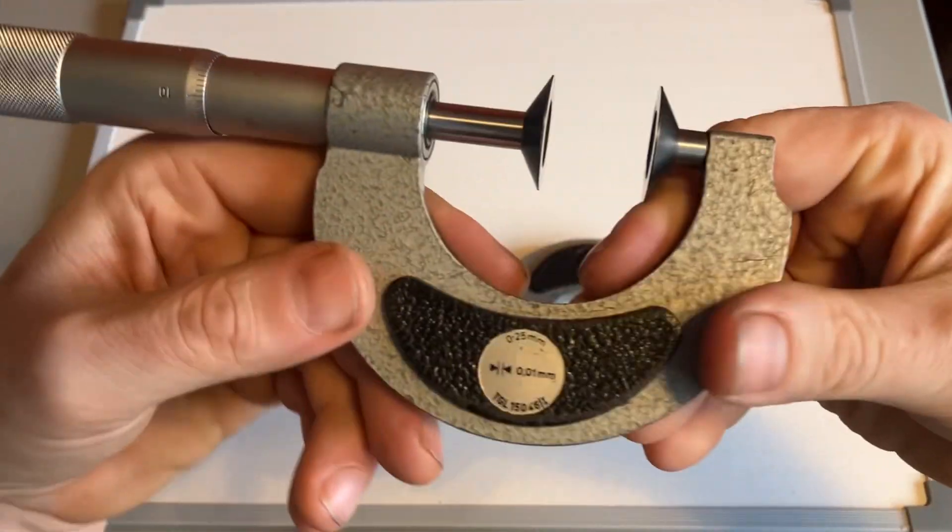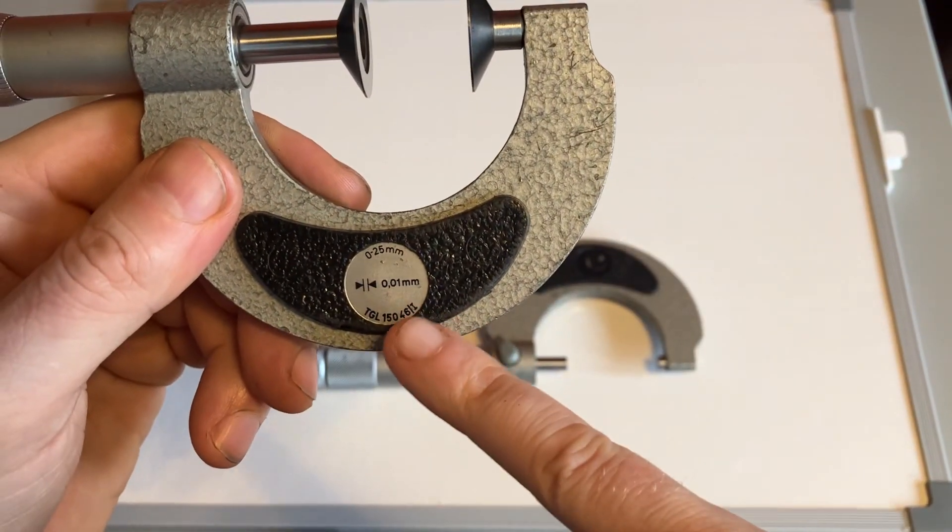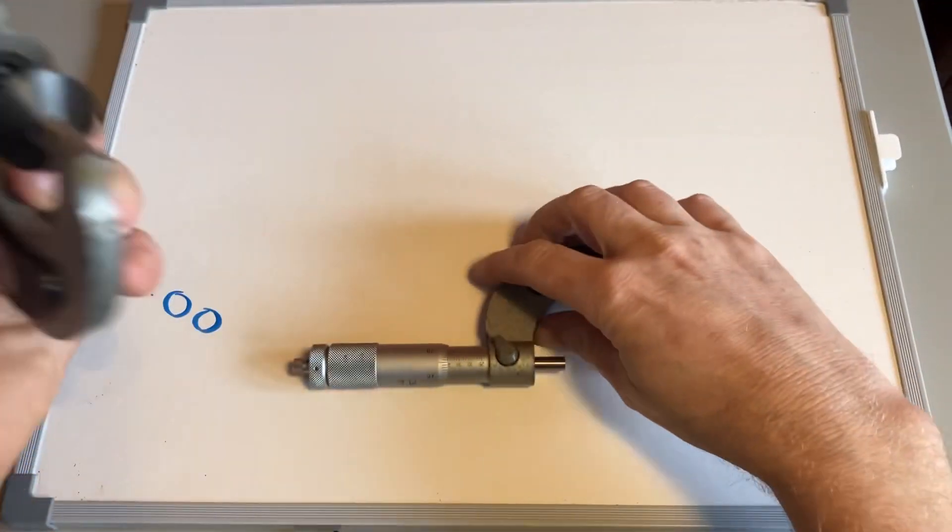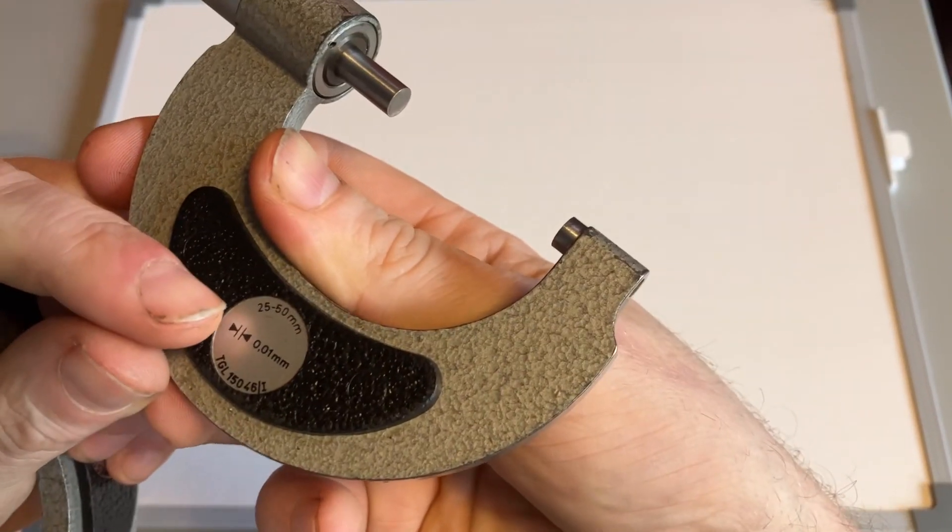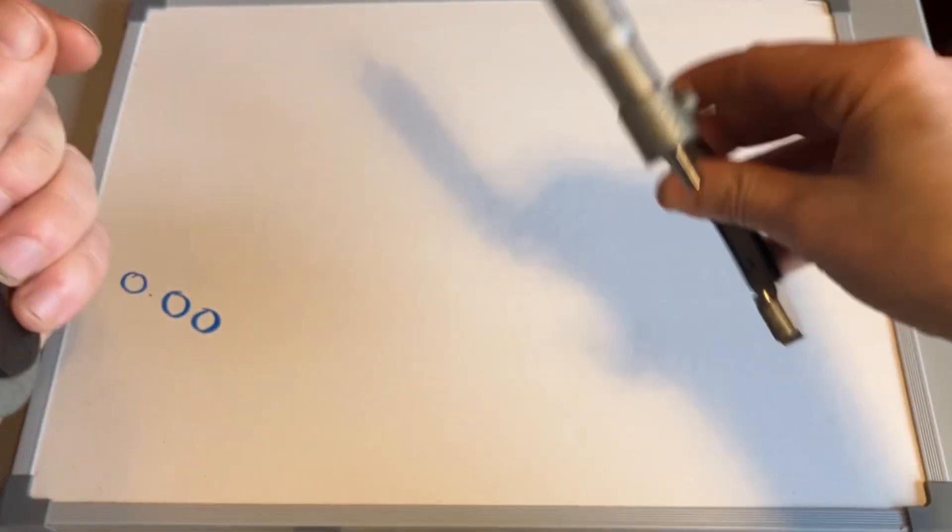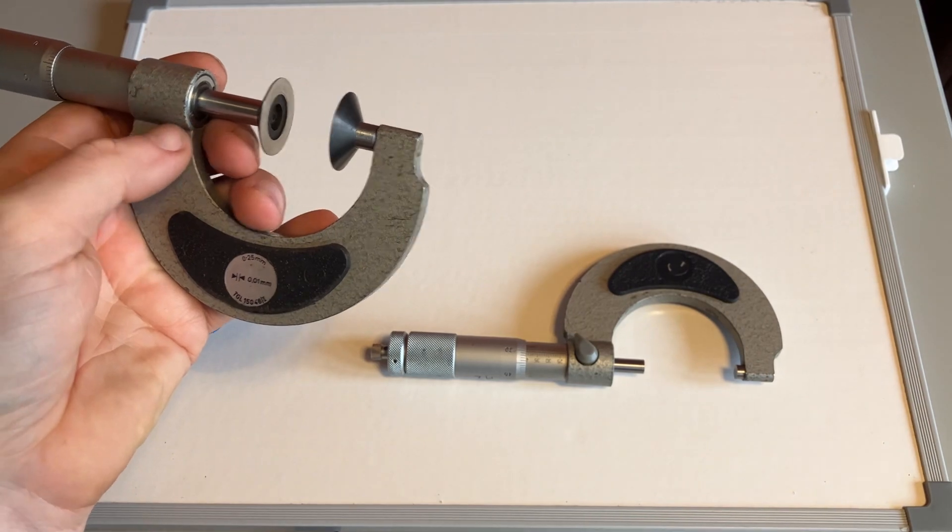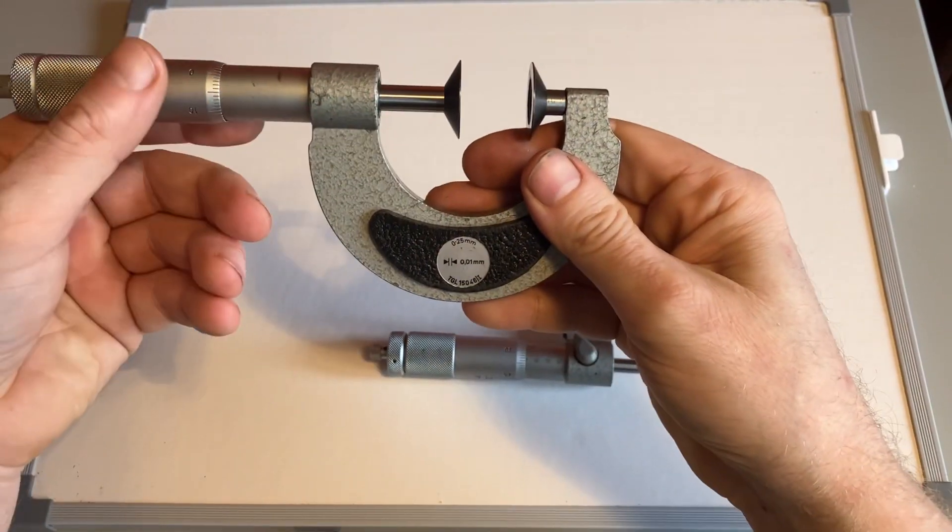First couple of things to mention, different micrometers have different gauges. This one is a 0-25mm one, whereas this one here is 25-50mm. So bear in mind if you're going to purchase one, the thickness of the materials you're most likely to be measuring, and make sure you buy the appropriate one for you.